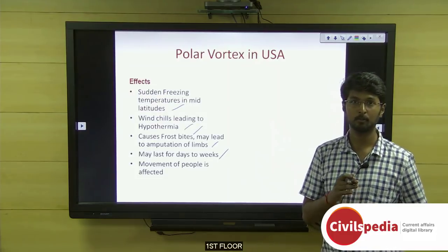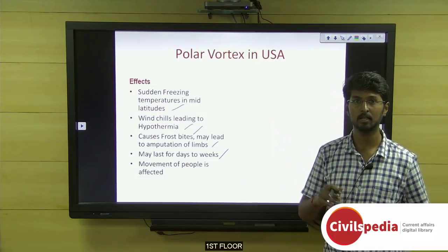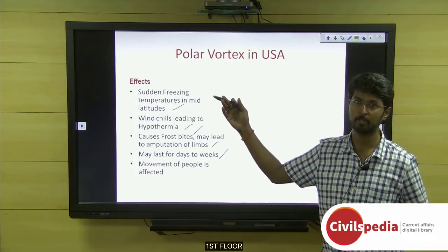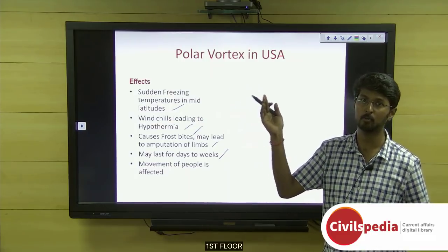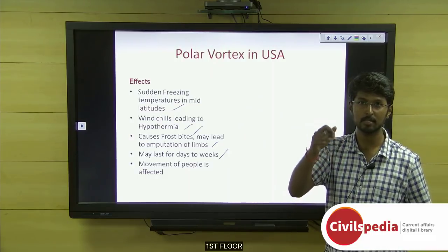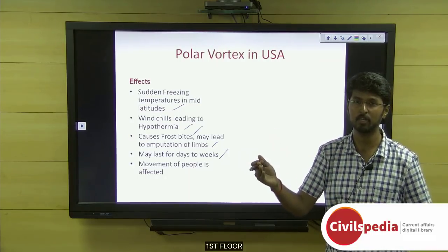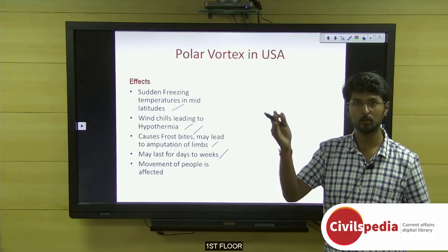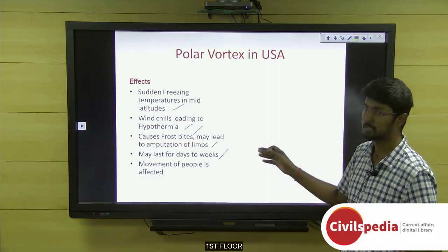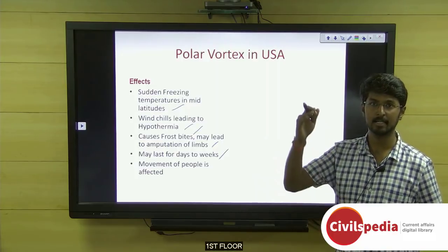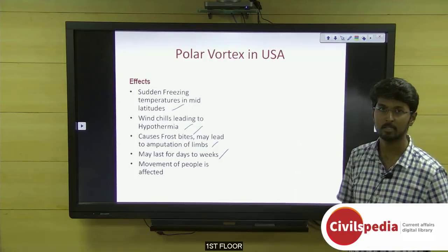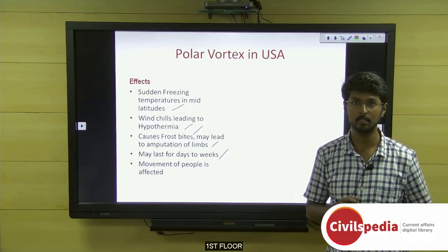The 2015 polar vortex was due to the Siberian front, where cold wind moved from the European continent towards the eastern part of the USA, affecting cities like New York. This year, the cold is descending from the polar region towards the midwest latitudes.